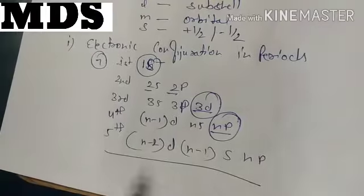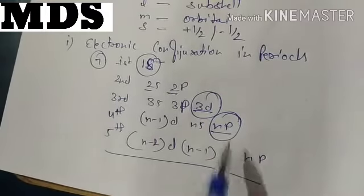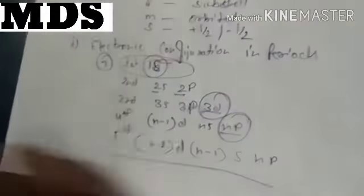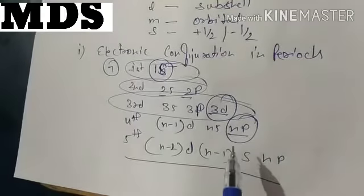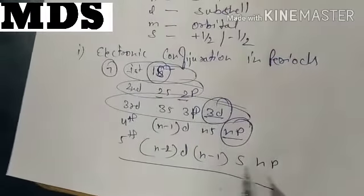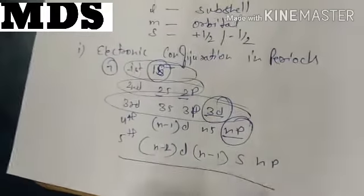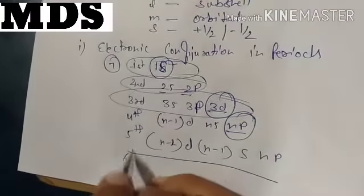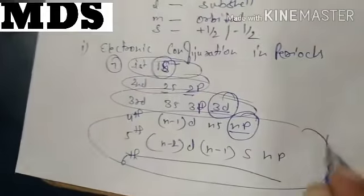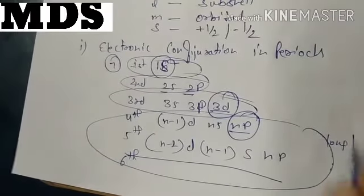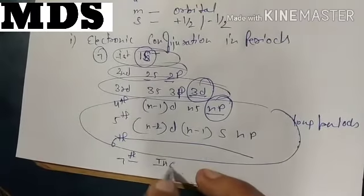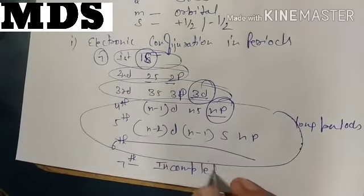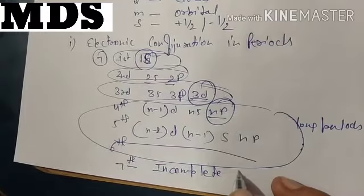The first, second, and third periods have a minimum number of elements and are known as short periods. The fourth, fifth, and sixth periods are known as long periods, and the seventh is known as the incomplete period, according to electronic configuration.